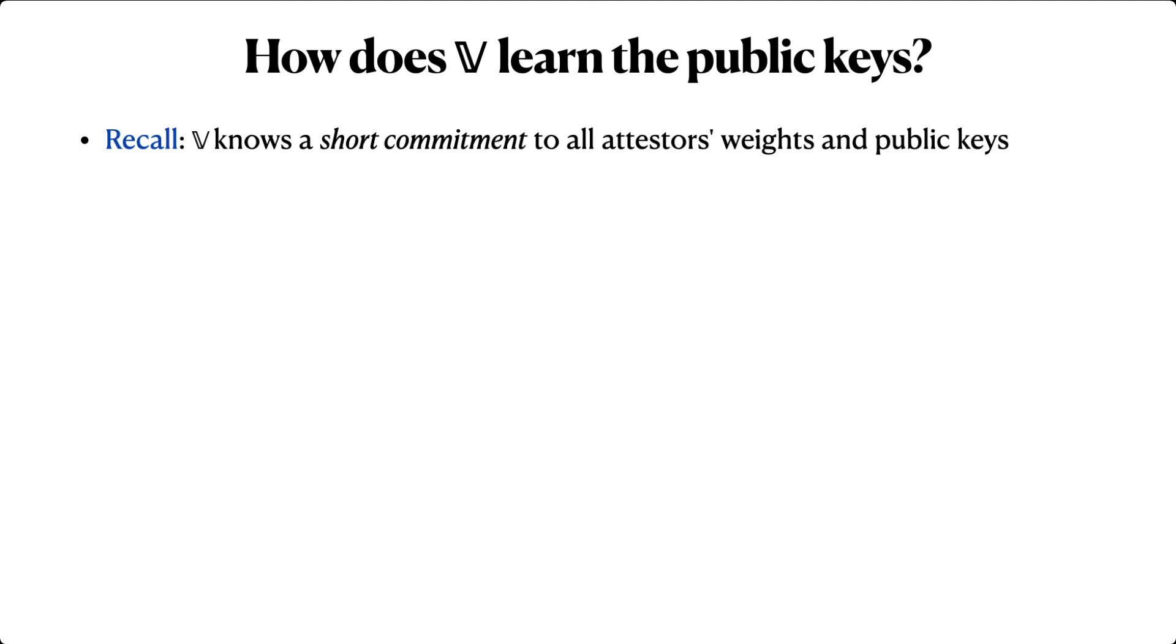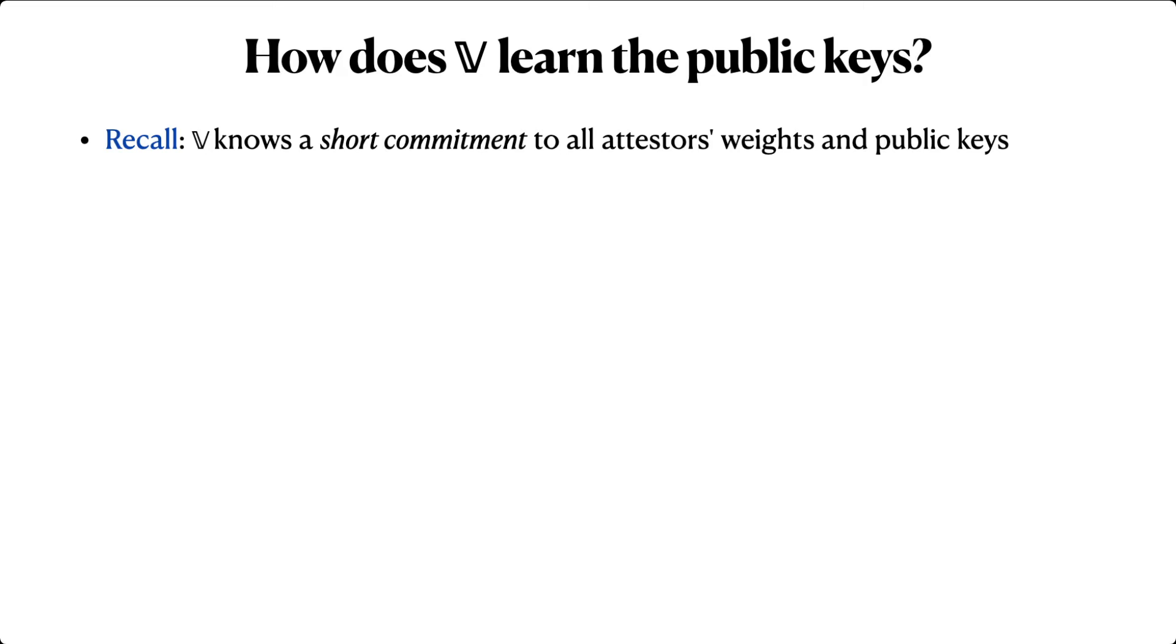First let's talk about public keys. Remember from the setup that the verifier does not know all attester weights and public keys, just a short commitment to them. In this construction, that commitment is the root of a Merkle tree, whose leaves contain the weights and public keys corresponding to each attester.